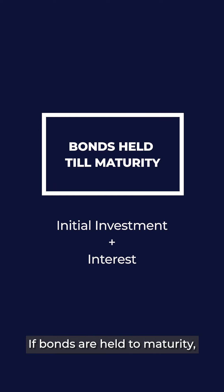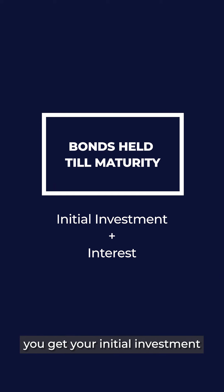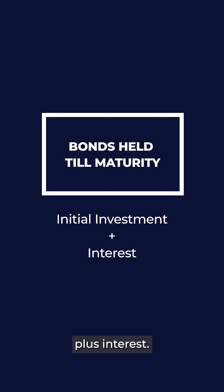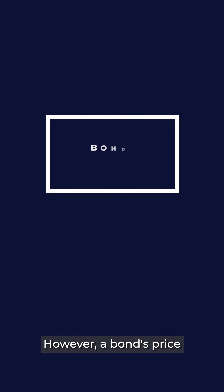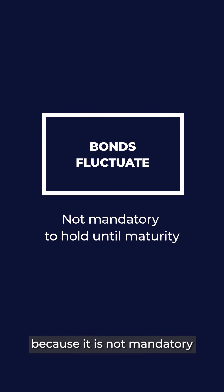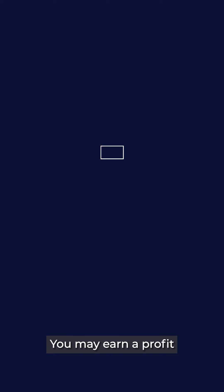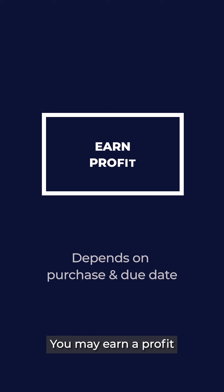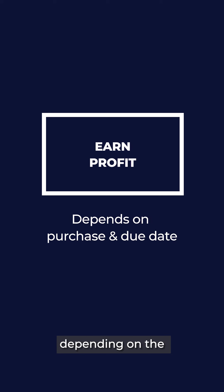If bonds are held to maturity, you get your initial investment plus interest. However, a bond's price fluctuates because it is not mandatory to be held until maturity. You may earn a profit by selling the bond depending on the purchase date and the due date.